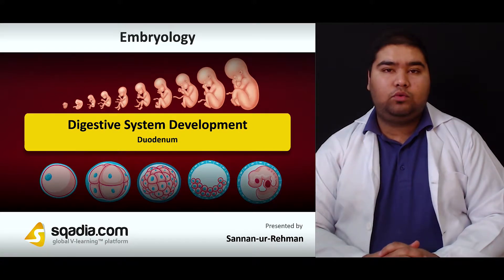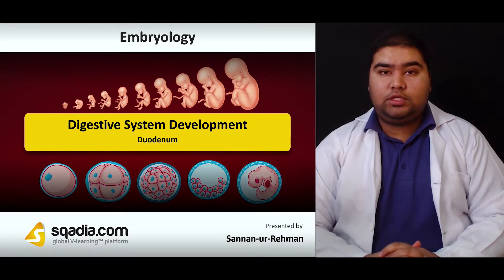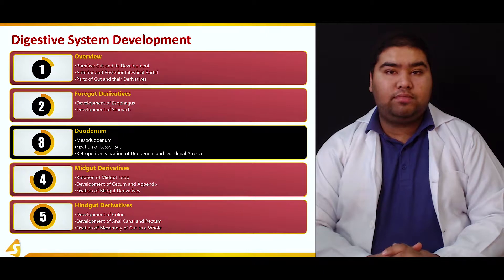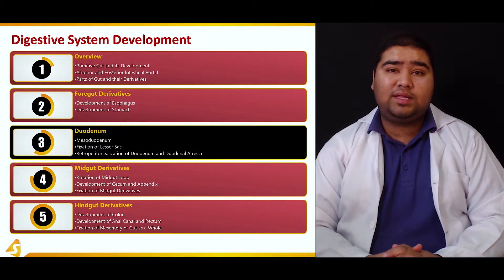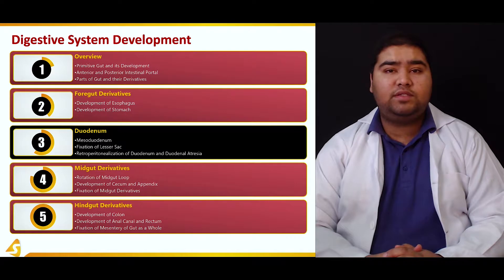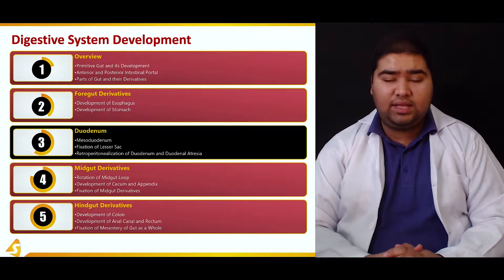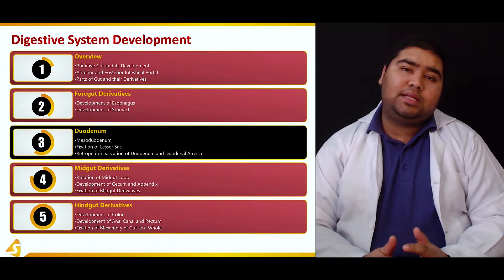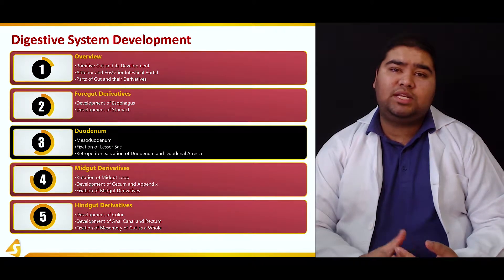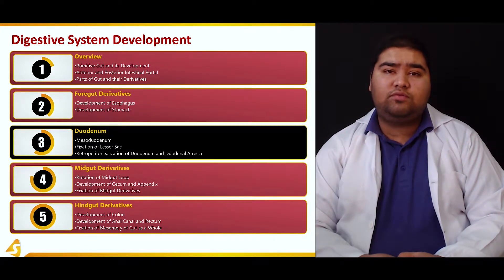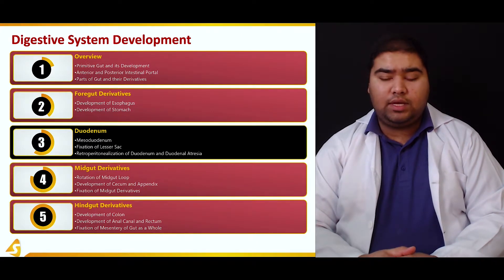We are still talking about the digestive system, and now we are at the duodenum. This section has been further divided into the mesoduodenum, which is the mesentery of the duodenum. We'll see how it develops, then talk about the formation of the lesser sac, how the rotation of the stomach results in the formation of an opening within the omentum, and how the peritoneum of the duodenum becomes obliterated and the duodenum goes into a retroperitoneal aspect.